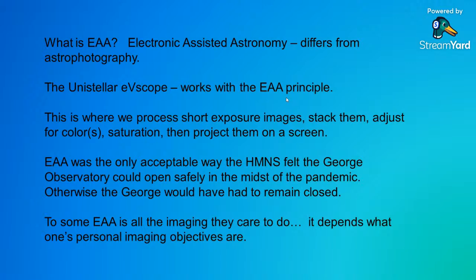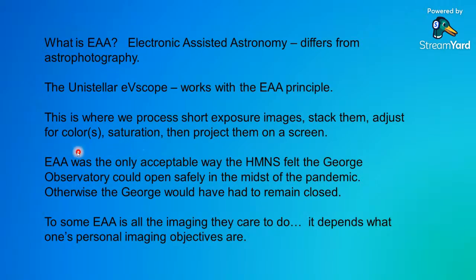This is where we process short exposure images, stack them, and adjust them for color and saturation, then put them onto a screen very, very quickly. You only need about five or six images to begin getting an image. Back in March of 2021, EAA was the only acceptable way that the HMNS felt the George Observatory could open safely in the midst of the pandemic. Otherwise, the George would have had to remain closed until probably very recently.